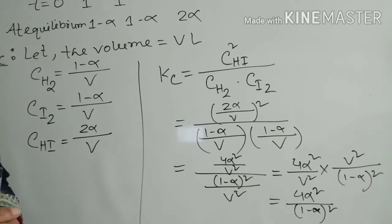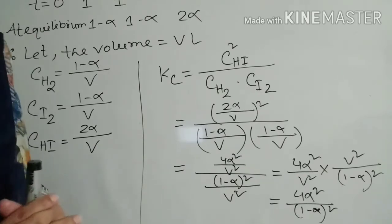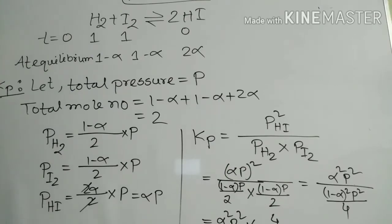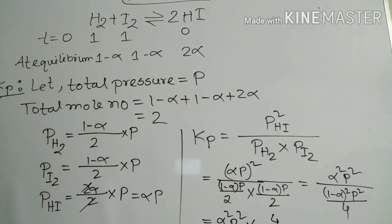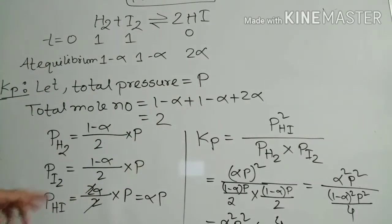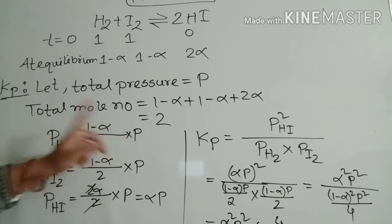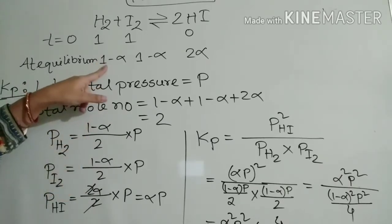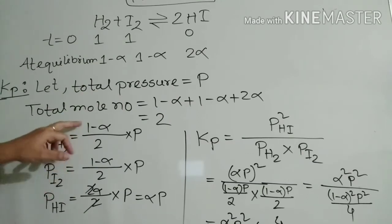If we derive Kp for the same reaction, we also find Kp = 4α² / (1−α)². Let total pressure equal P. The total mole number equals (1−α) + (1−α) + 2α = 2. The partial pressure of H₂ equals (1−α)/2 × P, because partial pressure equals mole fraction times total pressure, and mole fraction equals moles of component divided by total moles.